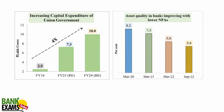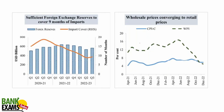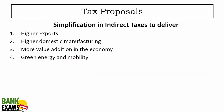Capital expenditure by the union government has increased. On asset quality, NPA was 8.2% in March 2020, reduced to 7.3% in March 2021, then to 5.8% in March 2022, and is at 5% in September 2022. India has sufficient foreign exchange reserves — currently around 575 to 580 billion US dollars — covering around 10 months of imports.